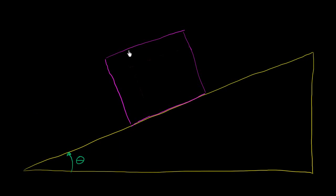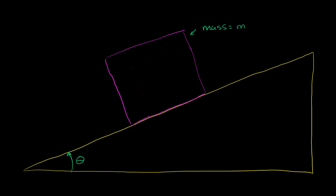Let's say I have some type of a block here, and this block has a mass of m. It's sitting on an inclined plane, or a ramp, or some type of wedge. We want to think about what might happen to this block and the different forces that might keep it in place or not. If this whole setup is near the surface of the Earth, there will be a force of gravity trying to attract this mass towards the center of the Earth.